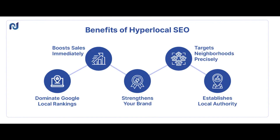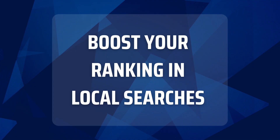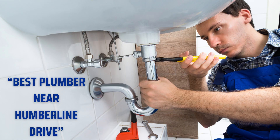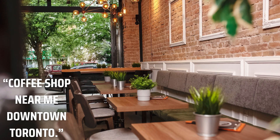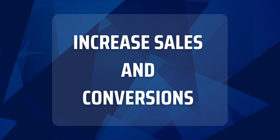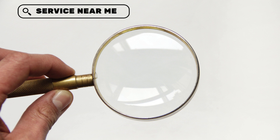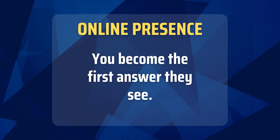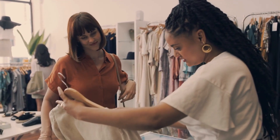Why is Hyperlocal SEO important for local Canadian businesses? Hyperlocal SEO helps you capitalize on local intent searches by optimizing your online presence for them. You can boost your ranking in local searches — imagine being in the top three results on Google Maps for searches like 'Best Plumber near Humber Line Drive' or 'Coffee Shop near me in downtown Toronto.' Hyperlocal SEO helps you climb local search rankings, making you more visible. When people search for what you offer, they'll see your business right away, making you the top choice. It can also help increase sales and conversions — when someone searches for a service near me, it usually means they're ready to buy and want something convenient nearby. By optimizing your online presence for these searches, you become the first answer they see, which can lead to more customers visiting your store or buying from you online.